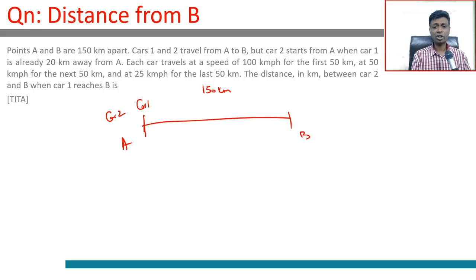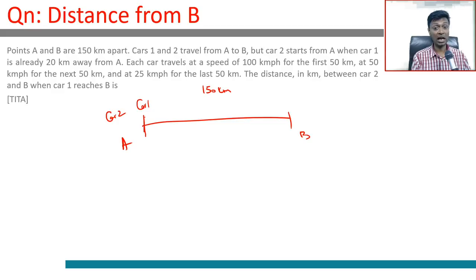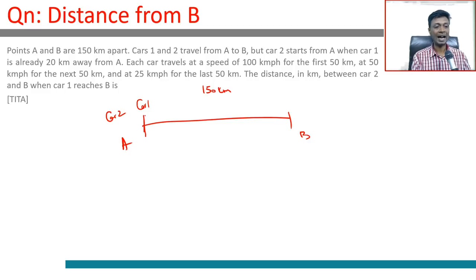Each car travels at a speed of 100 kilometers per hour for the first 50 kilometers, 50 kilometers per hour for the next 50 kilometers, and 25 kilometers per hour for the last 50 kilometers. The question is: what is the distance in kilometers between car two and B when car one reaches B?